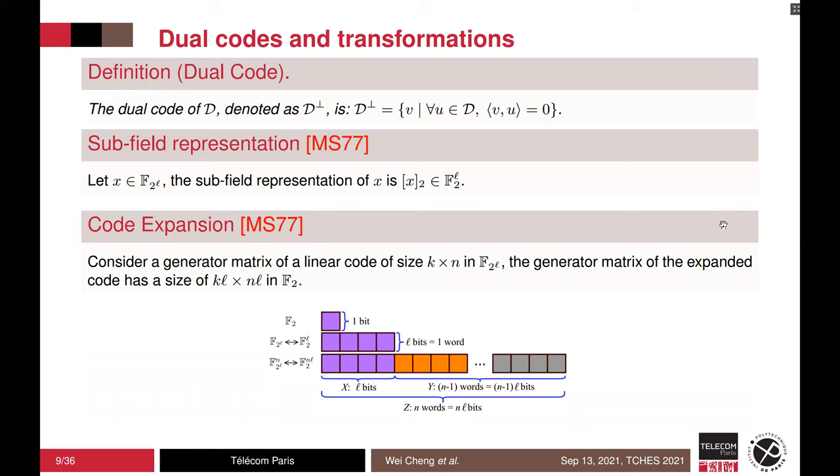Before we move into details, we recall some definitions and transformations. The first one is the dual distance. The dual code, denoted as D^⊥, given an inner code D, the dual code is that each codeword v is orthogonal to all codewords in D. Next, some subfield representation and code expansion, by which we can extend a linear code from big finite field to subfield F₂.